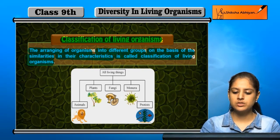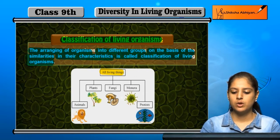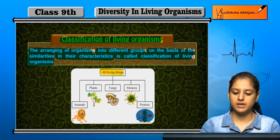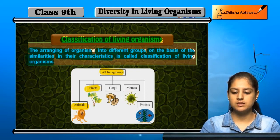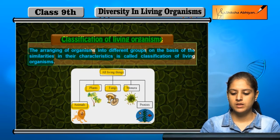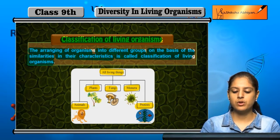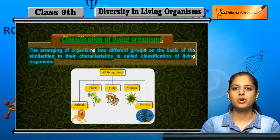All living organisms present on Earth are mainly divided into five categories: first, animals; second, plants; third, fungi; fourth, monera; and fifth, protists. These are five broad classifications.